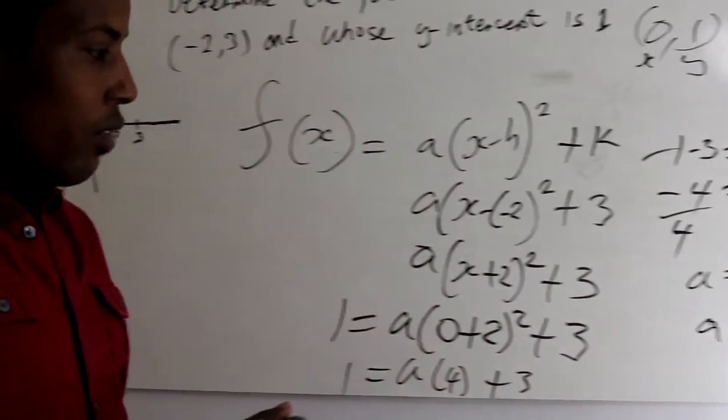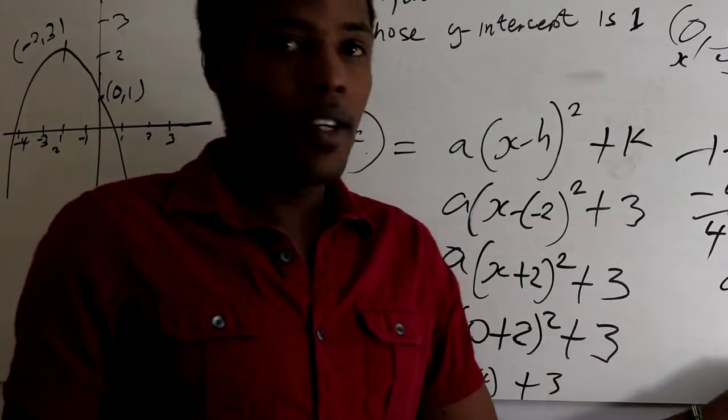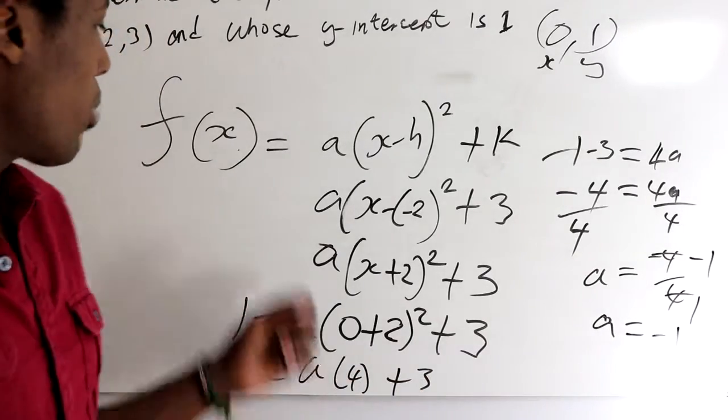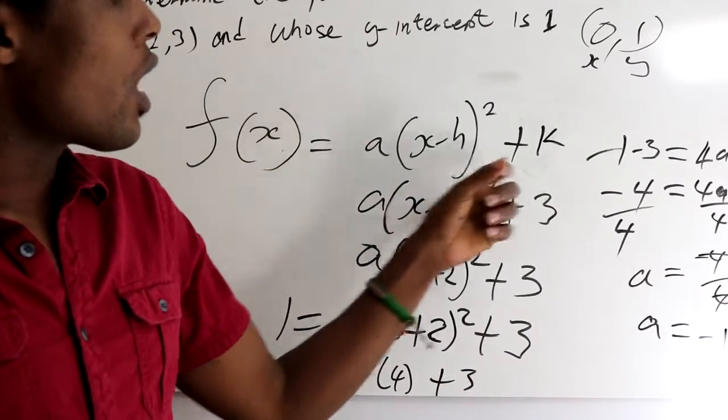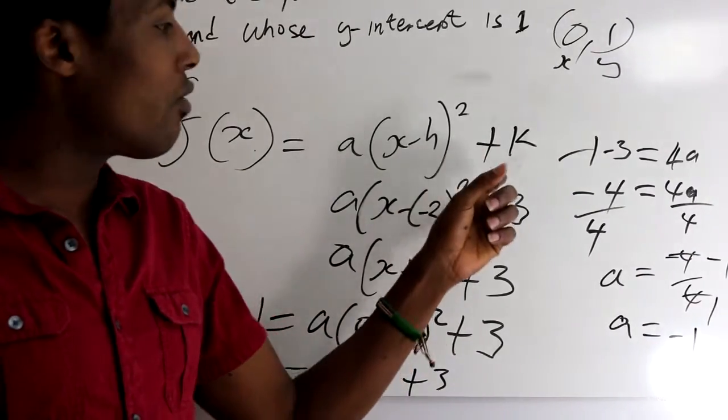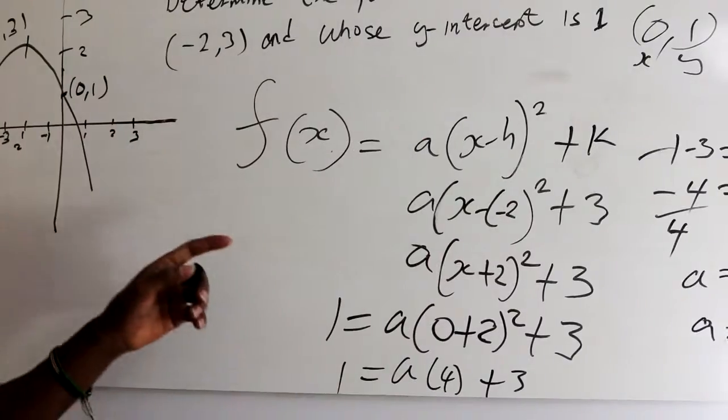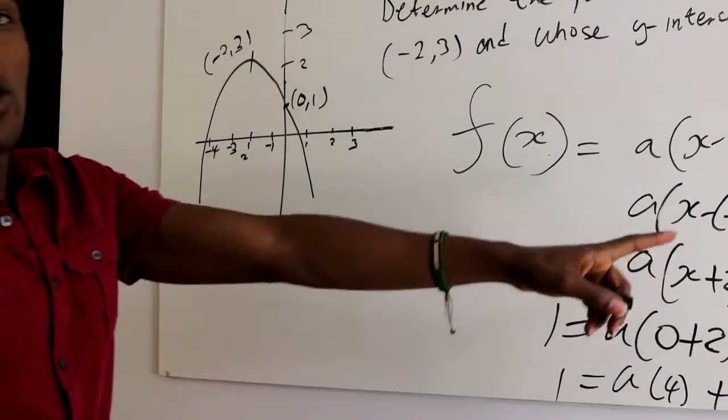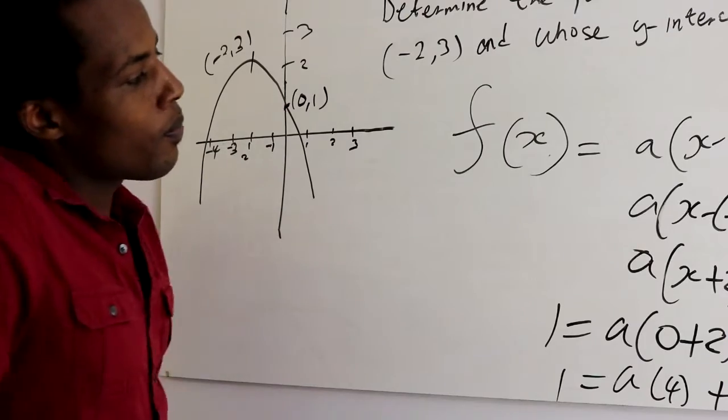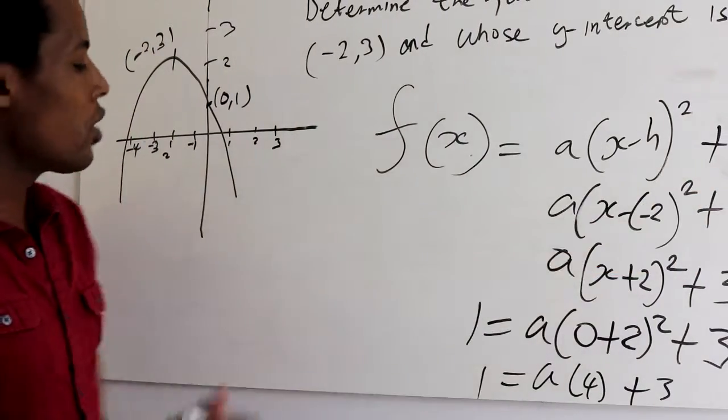So A is equal to minus 1. So now we already find the value of A here. A is equal to minus 1. So now we can go back and replace our value.